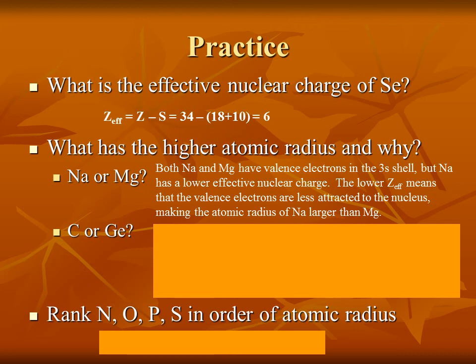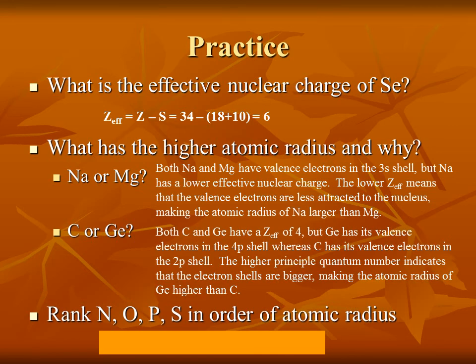Applying the same logic to carbon and germanium: both have an effective nuclear charge of 4, but germanium has its valence electrons in the 4p shell whereas carbon has its valence electrons in the 2p shell. The higher principal quantum number indicates that the electron shells are bigger, making the atomic radius of germanium larger than carbon. The framework for these answers is: what they have in common, what the difference is, how that difference affects the property — and don't forget to state which one is bigger. Germanium is bigger than carbon.